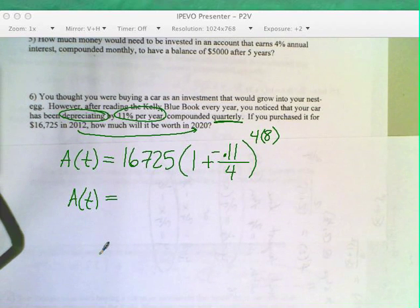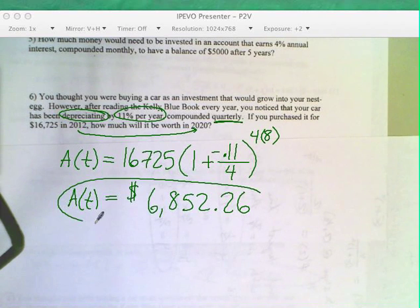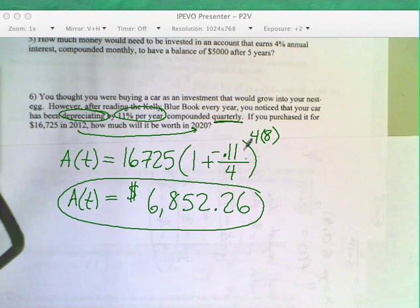You get $6,852.26. That's a horrible investment. If you got a number that was close to this, but not quite right, you probably rounded. And we say in here, you don't want to round until the very end. So you keep these numbers in your calculator, multiply them out, don't round at all until the very end, and then you go two decimal places because it's money.